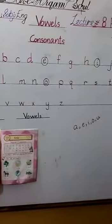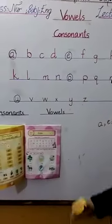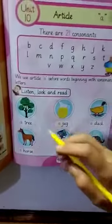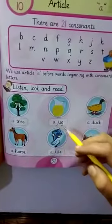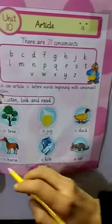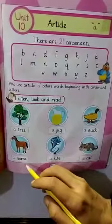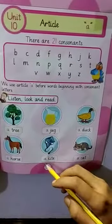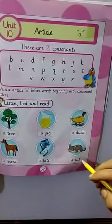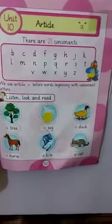Now, listen, look and read after me: a tree, a jerk, a duck, a horse, a kite, a cat.